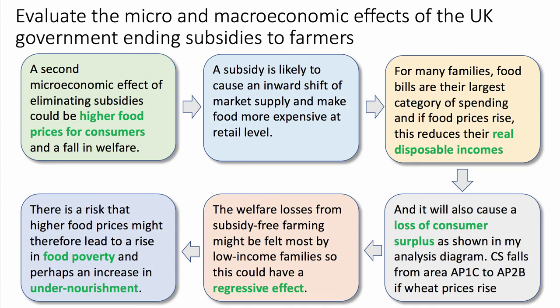My second micro effect of eliminating subsidies — signposting for the examiner — is that eliminating subsidies could cause higher food prices for consumers and a fall in welfare. The chain of reasoning: subsidies removal likely causes an inward shift of market supply, making food more expensive in shops. For many families, food bills are the biggest category of spending, so higher prices cut real disposable income. Effectively, an increase in food prices acts like a tax and will cause a loss of consumer surplus, as shown in my analysis diagram.